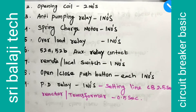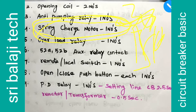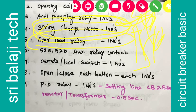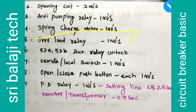Now we will discuss the spring charge motor. When we use the spring charge motor, we can close using it. Once it is closed and open, we can use a spring surge. We can use a three-phase motor with an overload relay. We can save the motor using the overload relay.